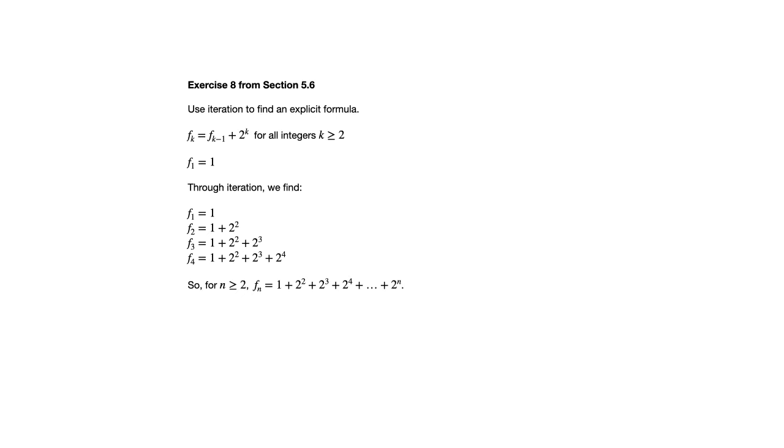Leaving it in this form is not really the best way to write an explicit formula, because we don't like to have ellipses in the middle — this could be many terms depending on what n is. We can really simplify this by using our formula for the sum of a geometric sequence.